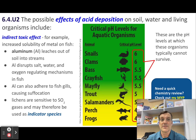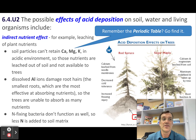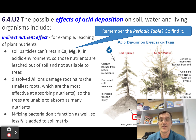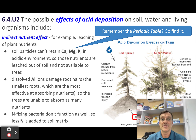Indirect toxic effects mean that acid deposition can indirectly harm living organisms by increasing the solubility of metals such as aluminum ions in water and soil. These metals can be toxic to fish and plants, especially in low pH conditions. For example, aluminum ions can damage the gills of fish and make it difficult for them to take in oxygen.